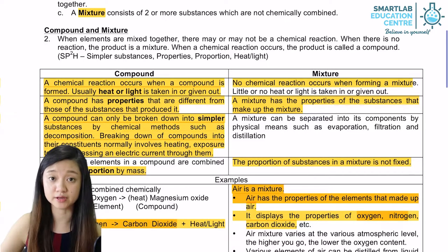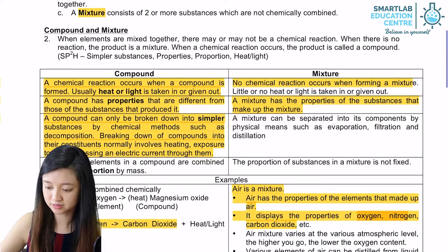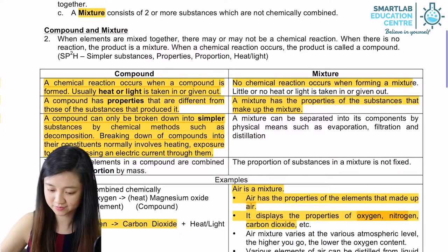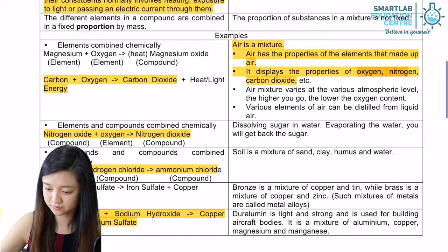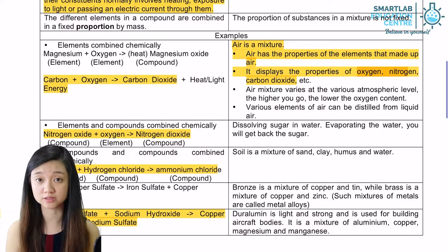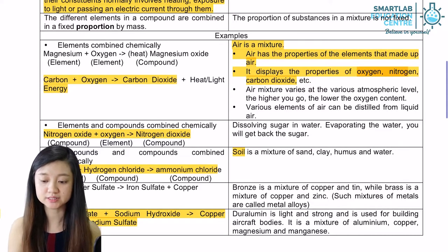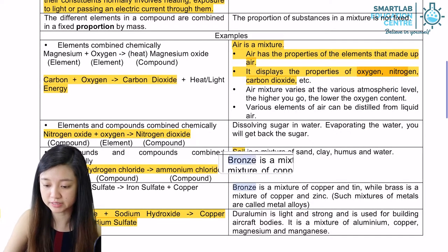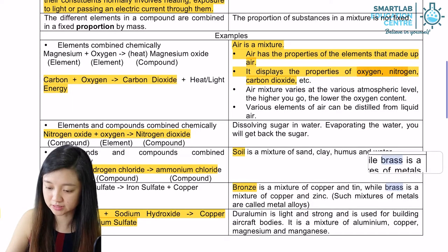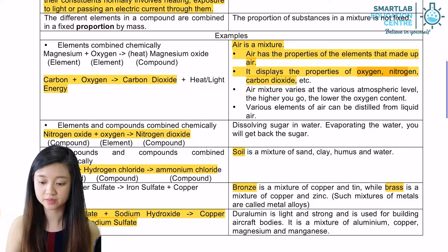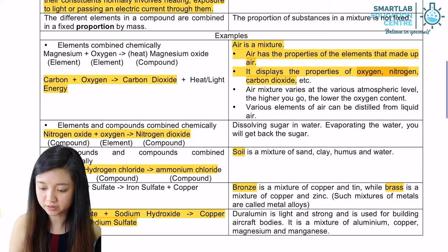Let us look at more examples of mixtures. When we dissolve sugar in water, it's actually a mixture called sugar solution. Soil is also a mixture of sand and clay. Bronze, as we mentioned earlier, is also a mixture of copper and tin. Duralumin is light and strong and it's actually a mixture of aluminium, copper as well as magnesium.